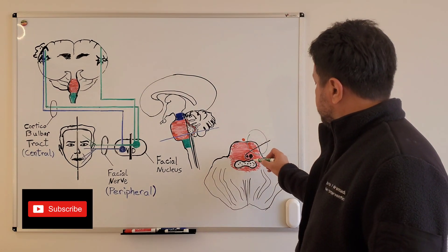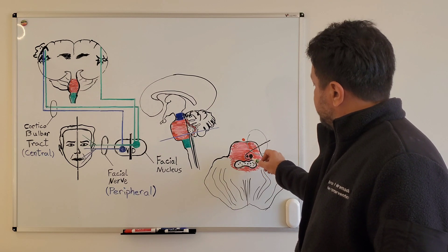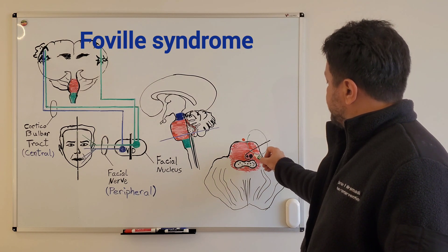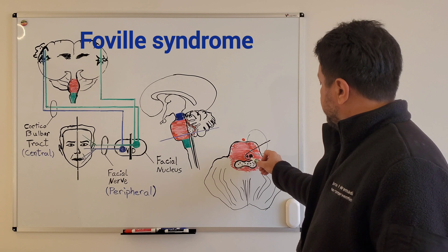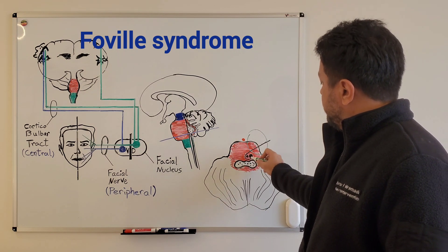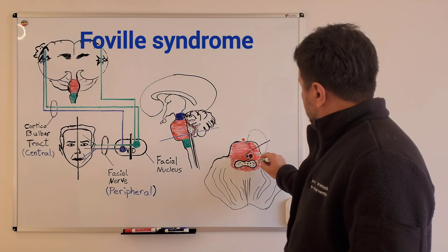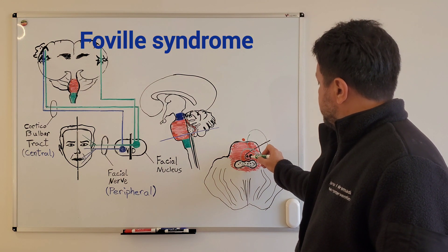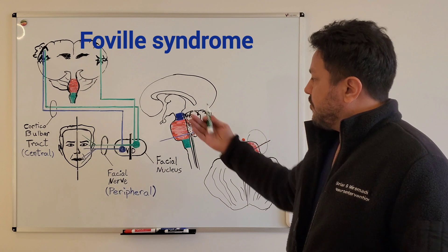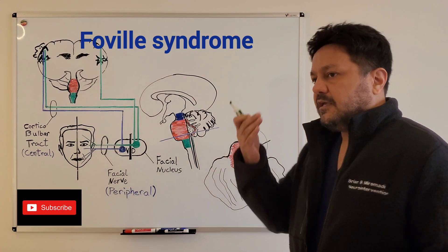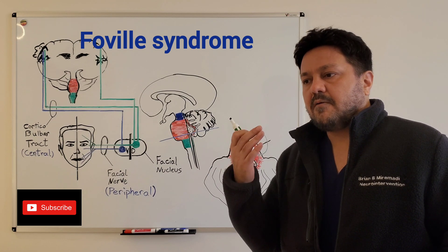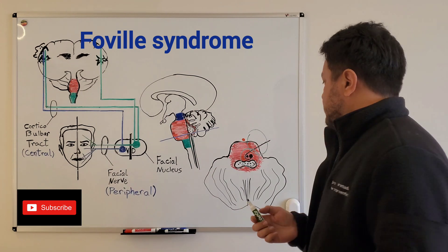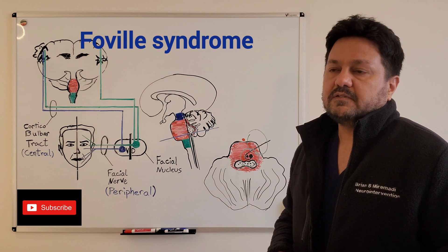Another important syndrome to know about the pons is when the tegmental pons, the back of the pons is involved. And as you know, the facial nucleus is right in front of the fourth ventricle, and next to it medially you're going to have the abducens nucleus. So in this syndrome, if this area is affected, your patient would present with ipsilateral upper and lower face as well as ipsilateral deficit in abducens nerve palsy. So there's going to be abduction deficits ipsilaterally in a syndrome called the Foville syndrome.